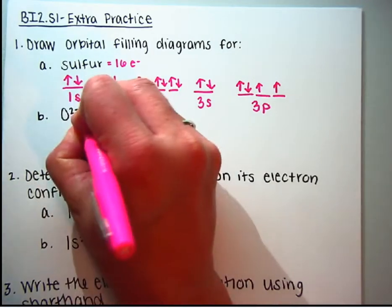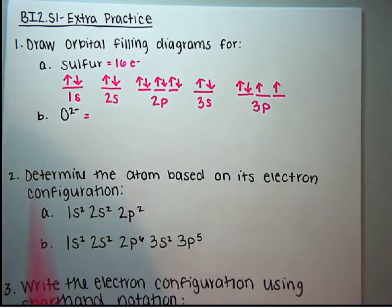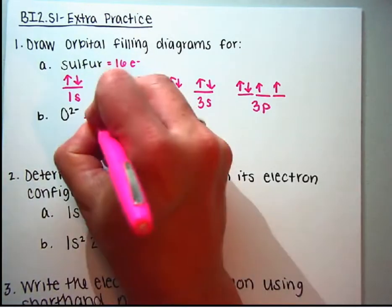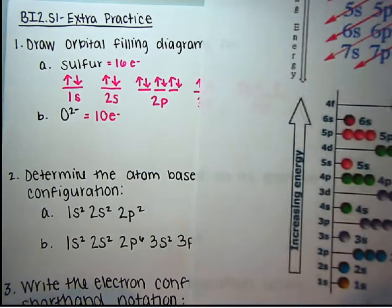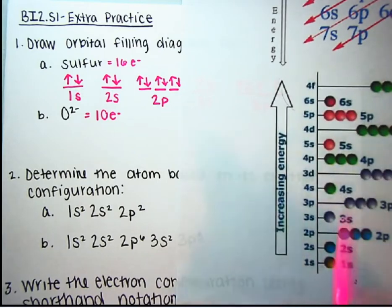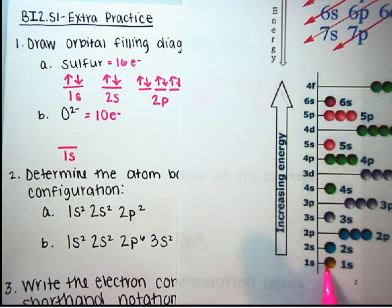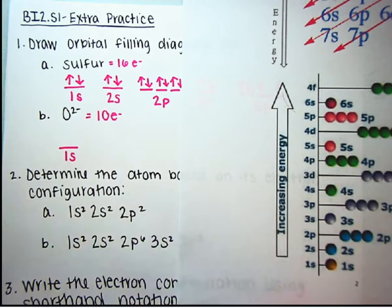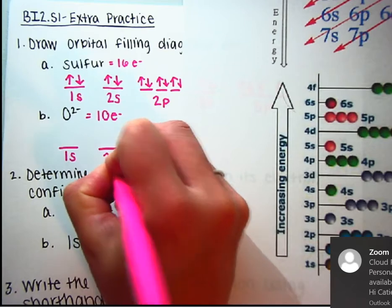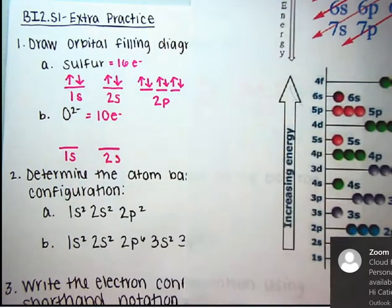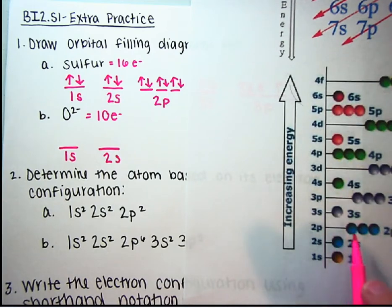Oxygen with a charge of 2 minus. Oxygen as an atom has 8 electrons. But if it has a charge of negative 2, it has 2 more electrons. So we need to account for 10 electrons. Again, we can use our little resource packet to help us. We always want to start with the lowest energy orbital first, which is 1s. One sphere means one orbital. I draw one line. Next is 2s. Again, one sphere. That means one orbital, one line.